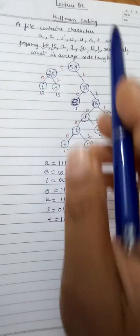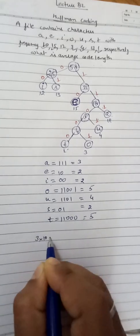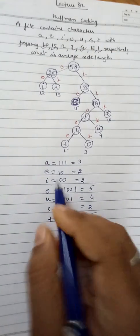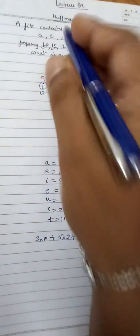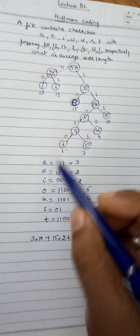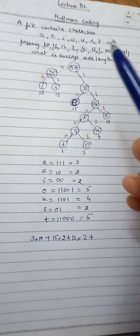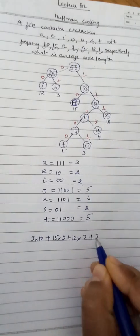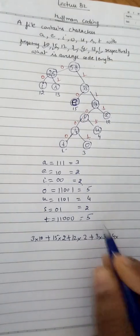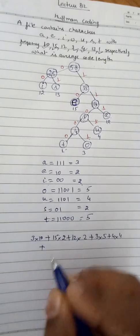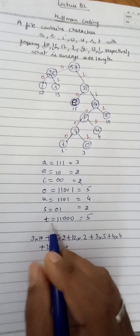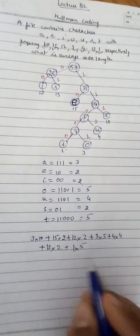Now we calculate the total weighted bits: frequency of a is 10 and bits are 3, so 3×10; e has frequency 15 and 2 bits, so 15×2; i has frequency 12 and 2 bits, so 12×2; o has frequency 3 and 5 bits, so 3×5; u has frequency 4 and 4 bits, so 4×4; s has frequency 13 and 2 bits, so 13×2; t has frequency 1 and 5 bits, so 1×5.